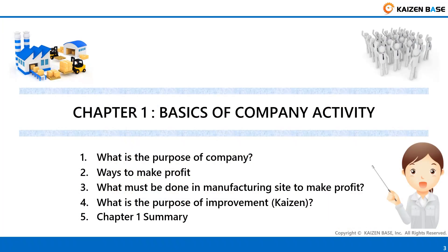We learn in the order of: 1. What is the purpose of company? 2. Ways to make profit. 3. What must be done in manufacturing site to make profit? 4. What is the purpose of improvement, Kaizen? 5. Chapter 1 Summary.